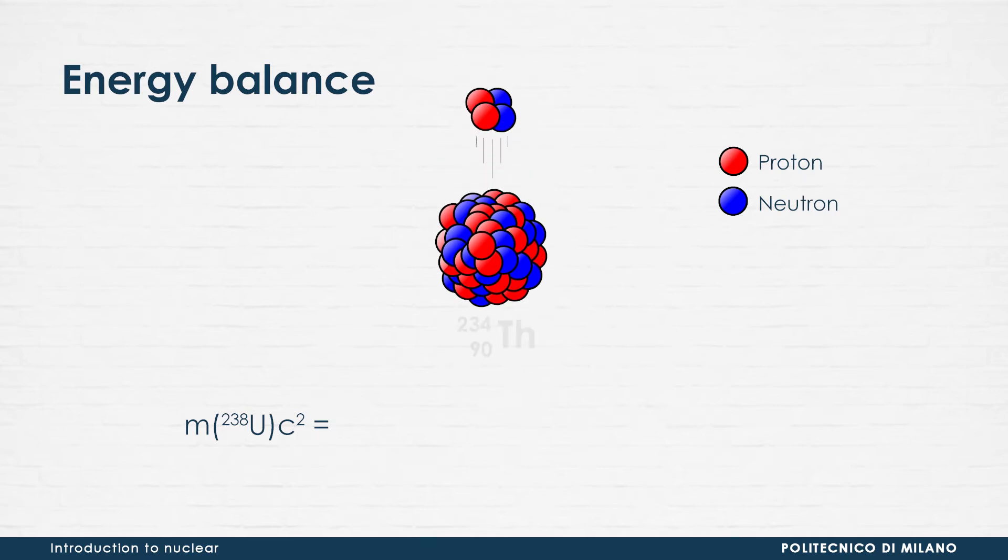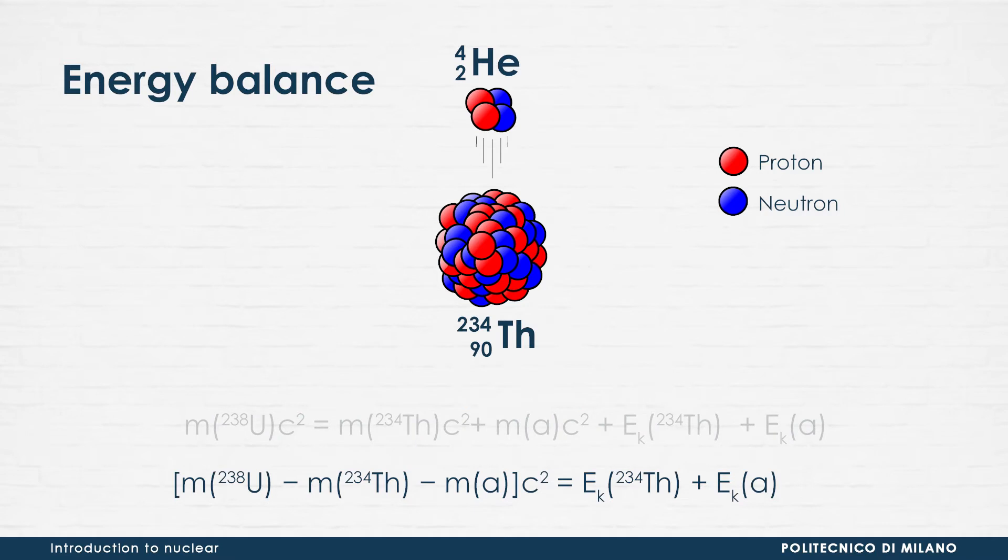After the decay, we have the thorium-234 nucleus and the alpha particle, both with their masses and the required kinetic energies. By rearranging the terms of the equation, we can highlight where the energy comes from and where the energy goes.